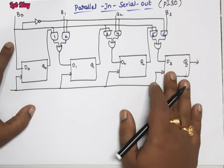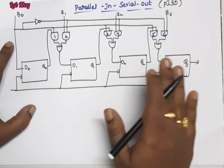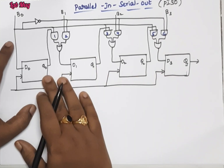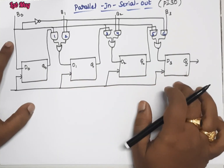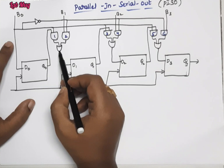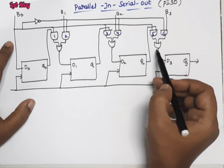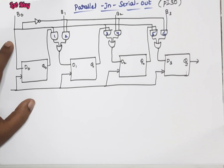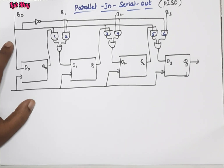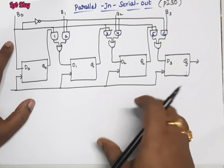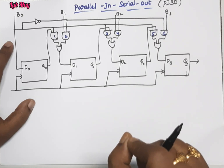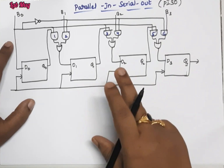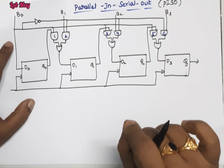So here, we are combining four flip-flops — D0, D1, D2 and D3. For these four flip-flops, we are accessing outputs Q0, Q1, Q2 and Q3. Here, there is a combination of two AND gates with an OR gate, two AND gates with OR gate, two AND gates with OR gate — this is different in parallel in serial output.